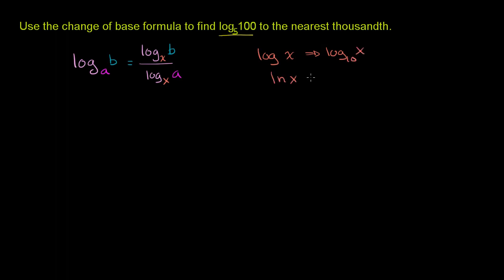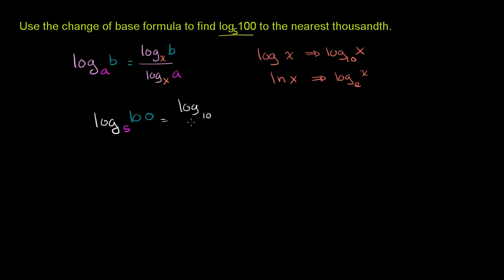If someone writes natural log of x, they are implying log base e of x, where e is 2.71 and goes on forever. Now let's apply it to this problem. We need to figure out log base 5 of 100. The change of base formula tells us that this is the exact same thing as log base 10 of 100, divided by log base 10 of 5.